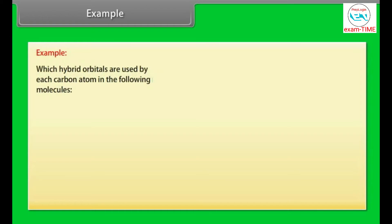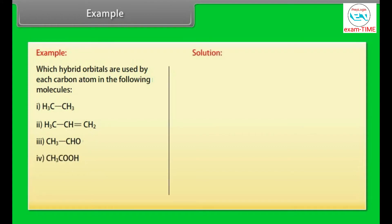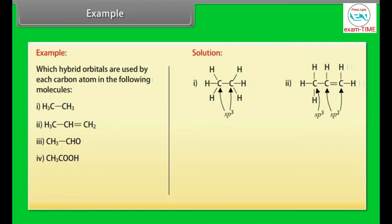Let's take an example on hybridization: which hybrid orbitals are used by each carbon atom in the following molecules? In the first molecule, carbon atoms use SP3 hybridization. In the second molecule, carbon atoms use SP2 and SP3 hybridization. In the third molecule, carbon atoms also use SP2 and SP3 hybridization.